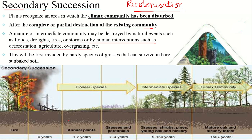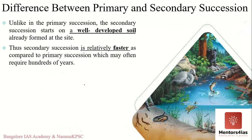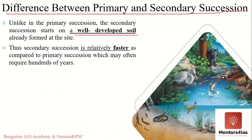Unlike primary succession, which always begins on a barren surface, secondary succession begins in environments that already possess soil. Therefore, secondary succession is relatively faster than primary succession. For example, if primary succession takes a thousand years, secondary succession may only take about 200 years. Secondary succession always starts with well-developed soil formed at that site.